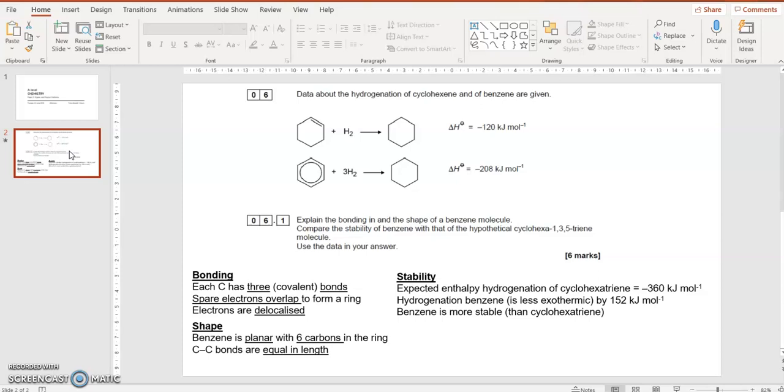Now if you do that three times over in a benzene ring, then you would expect it would release 360 kilojoules per mole of energy. But it releases less, it releases 152 kilojoules per mole of energy less than you'd expect. That means that it's more stable, less energy released.